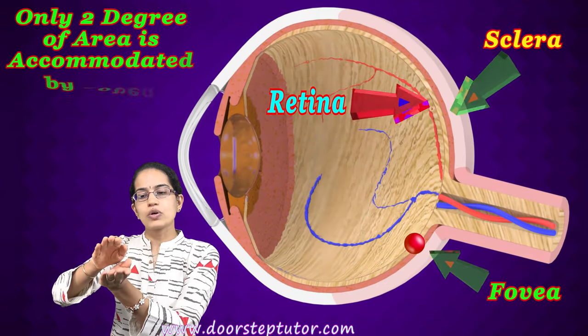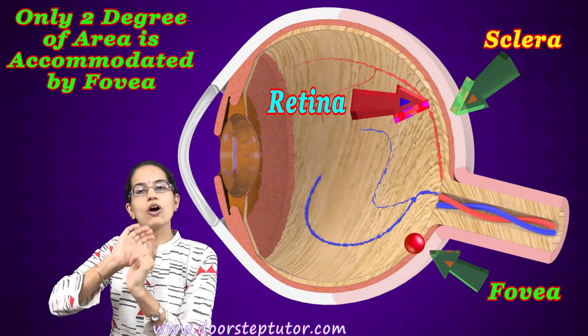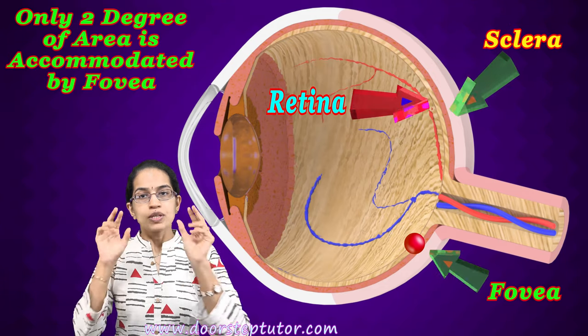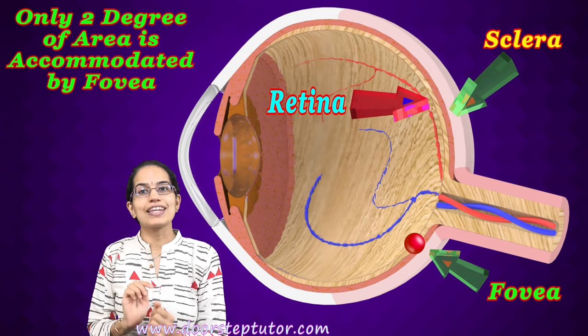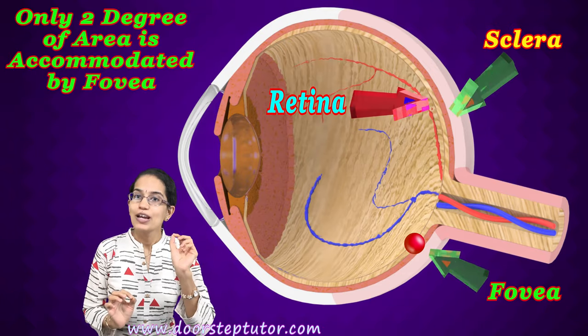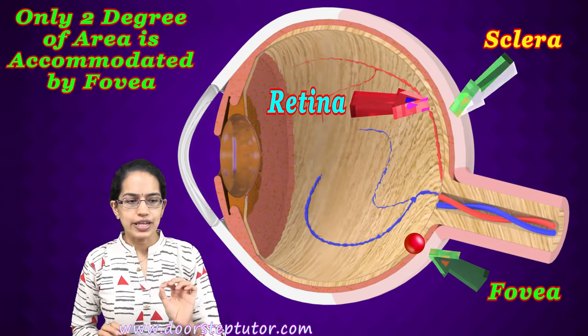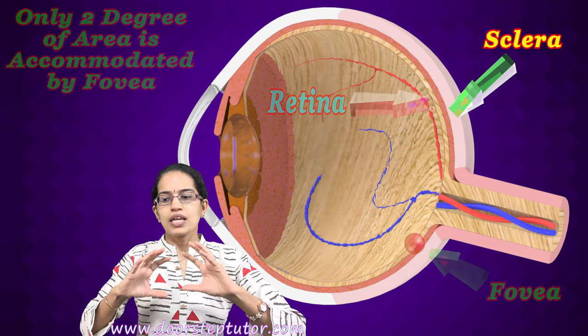The fovea is able to accommodate only a two-degree area. So only two degrees of the visual field is accommodated by the fovea at any given time. This is a very important concept.